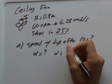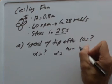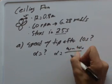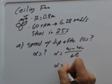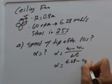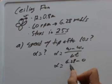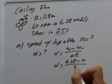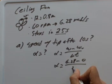So to get alpha here, I can use equation 2, which says alpha is omega minus omega naught over delta T. So alpha then will be the omega there, the 6.28 radians per second, minus zero because it's starting at rest here, divided by delta T here, 25 seconds.